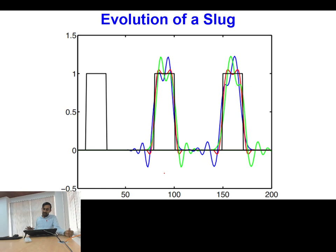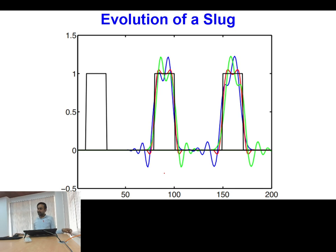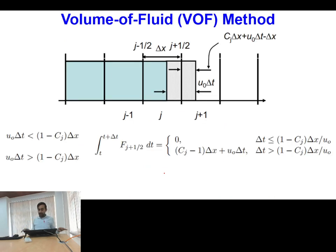In our last discussion, we considered a one-dimensional slug moving in a pipe. With the piecewise constant scheme, that was leading to large diffusion with the propagation of the slug. When we considered the piecewise linear scheme, we were able to slightly decrease the diffusion, but in that case the oscillations were significant.